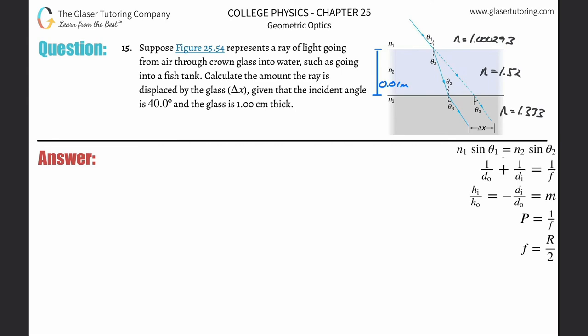Number 15: Suppose Figure 25.54 represents a ray of light going from air through crown glass into water, such as going into a fish tank. Calculate the amount the ray is displaced by the glass (delta x), given that the incident angle is 40 degrees and the glass is one centimeter thick.